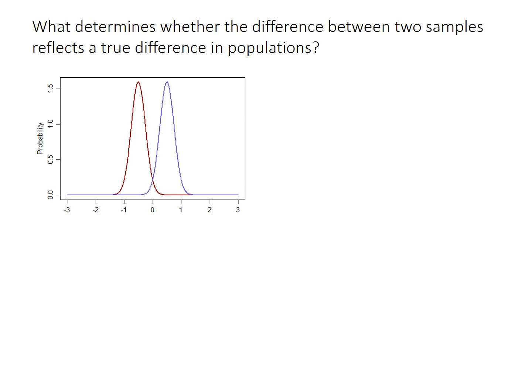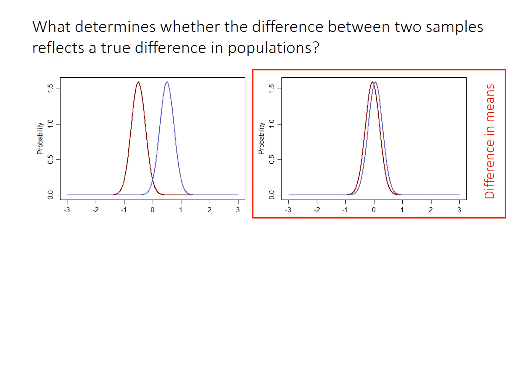Conceptually, what are some of the factors that would make you think two samples come from different populations, rather than being two random draws from the same population? If you had these two distributions illustrated here, intuitively you'd probably think they came from different populations, given that they don't really overlap very much. However, in this example, you'd probably guess the two distributions came from the same population, given that they overlap quite a lot.